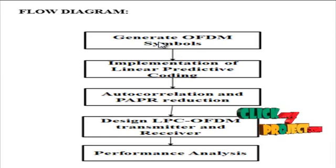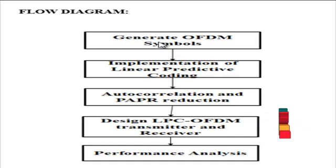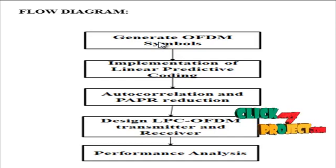OFDM is a frequency division multiplexing scheme used as a digital multi-carrier modulation method and is essentially identical to coded OFDM and discrete multi-tone modulation. It is used in such diverse applications as digital television and radio broadcasting, wireless networking and broadband internet access.